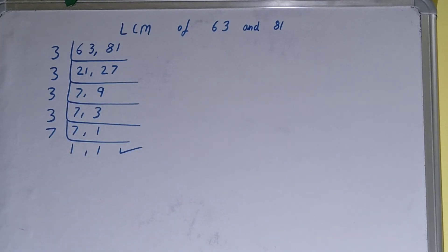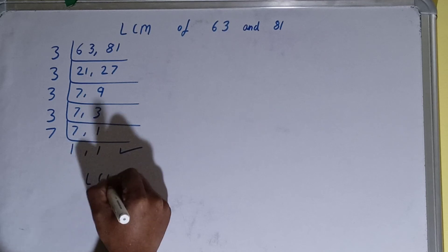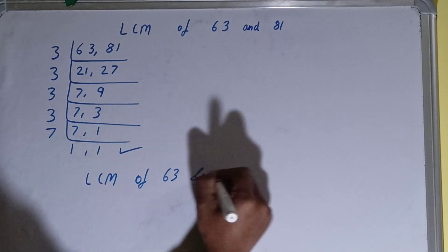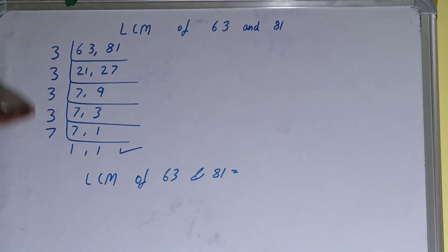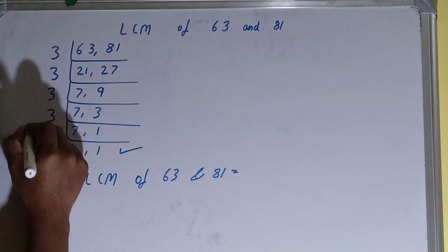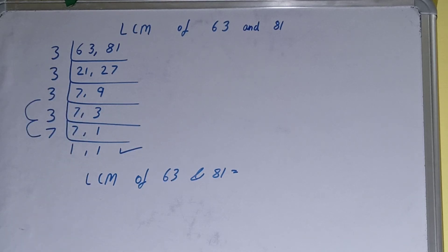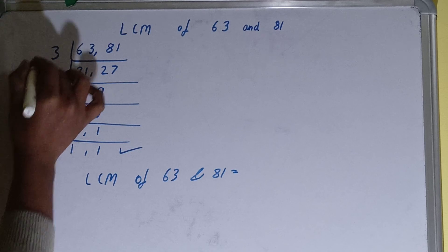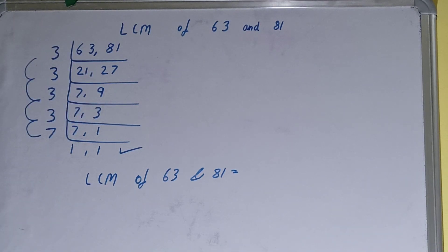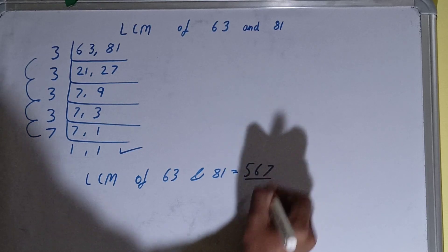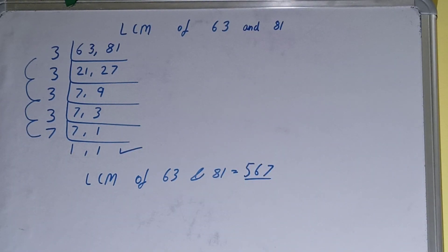Once we get that, we need to stop and we need to do one last thing. That is, LCM of 63 and 81 equals multiplying whatever we have on the left-hand side. That is: 7 threes are 21, 21 threes are 63, 63 threes are 189, 189 threes are 567. So that will be your final answer or LCM.